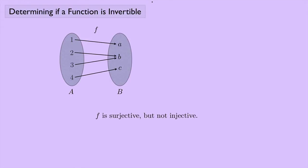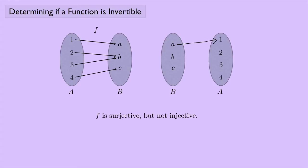Let's try and create an inverse function for this — a function that goes from the set B to the set A. I see that 1 is mapped to A, so I would want A mapped back to 1. 2 is mapped to B, so I would want B mapped back to 2. But 3 is also mapped to B, so I would want B mapped to 3 as well. This is a problem because a function can't map one element to two different things. So this doesn't work.